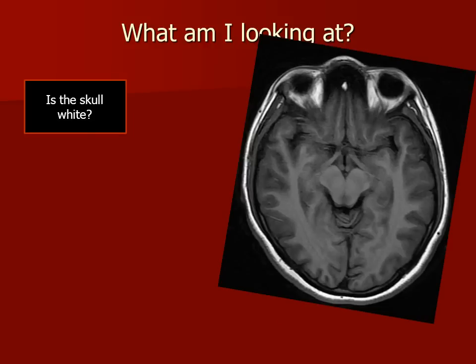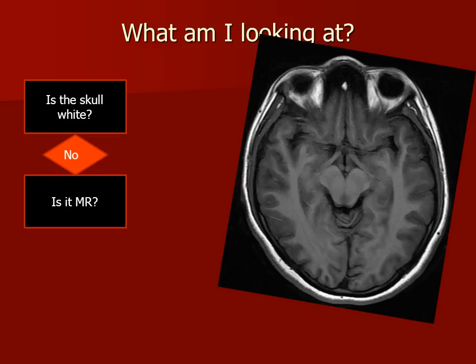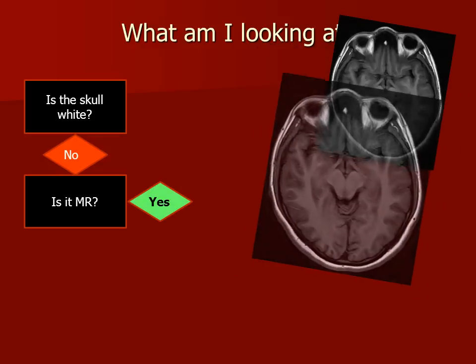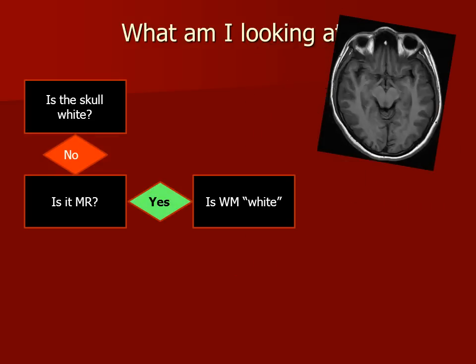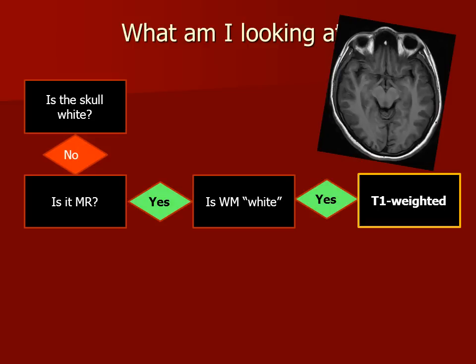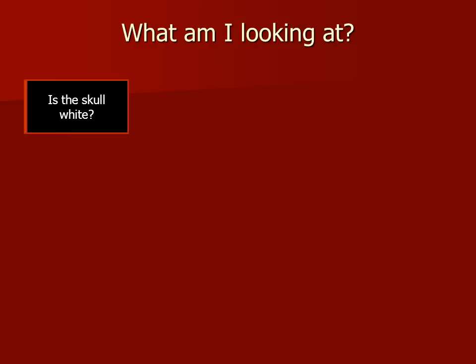But if you look at this image here, we want to sort through very carefully to figure out what it is. The skull is not white. The white ring around the outside is actually scalp fat. This is an MR. And if we look carefully, we can see that the white matter is actually a lighter shade of gray than the gray matter. So this is a T1 weighted MR scan. We can also look at the CSF and the water in the eyeballs and see that they are very dark.